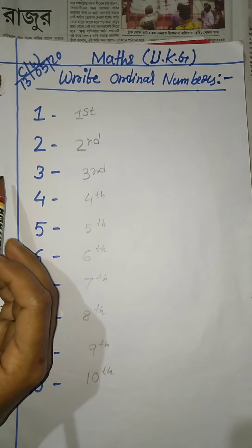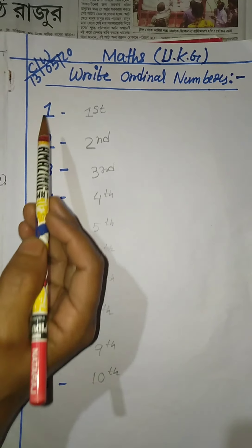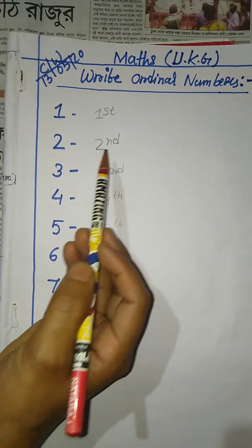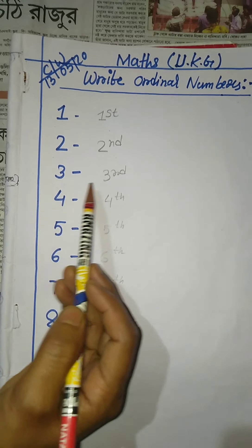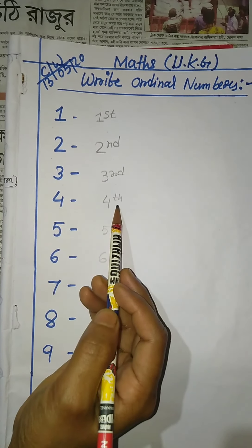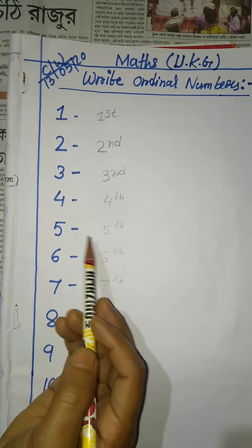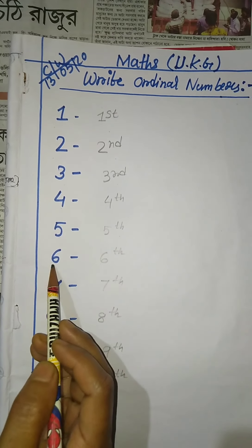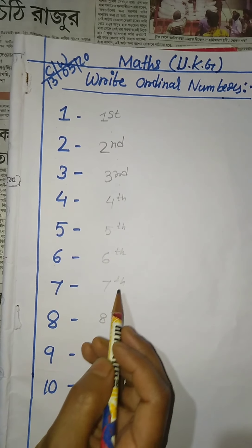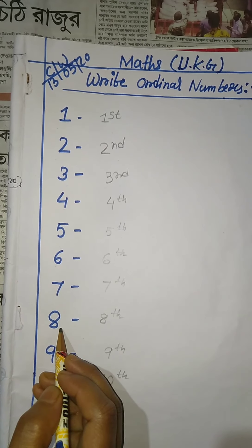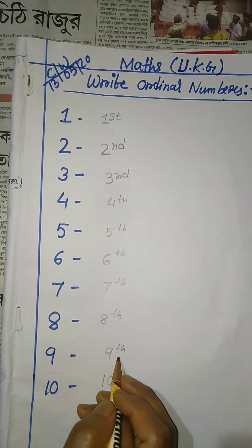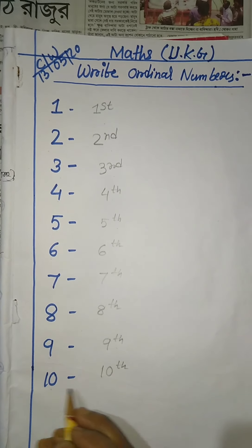So, again everyone say with me: one — first; two — second; three — third; four — fourth; five — fifth; six — sixth; seven — seventh; eight — eighth; nine — ninth; ten — tenth.